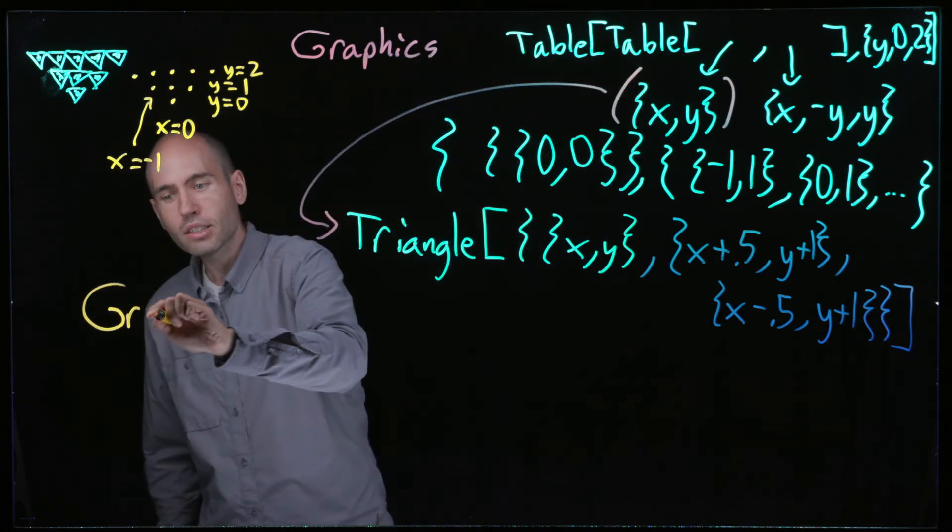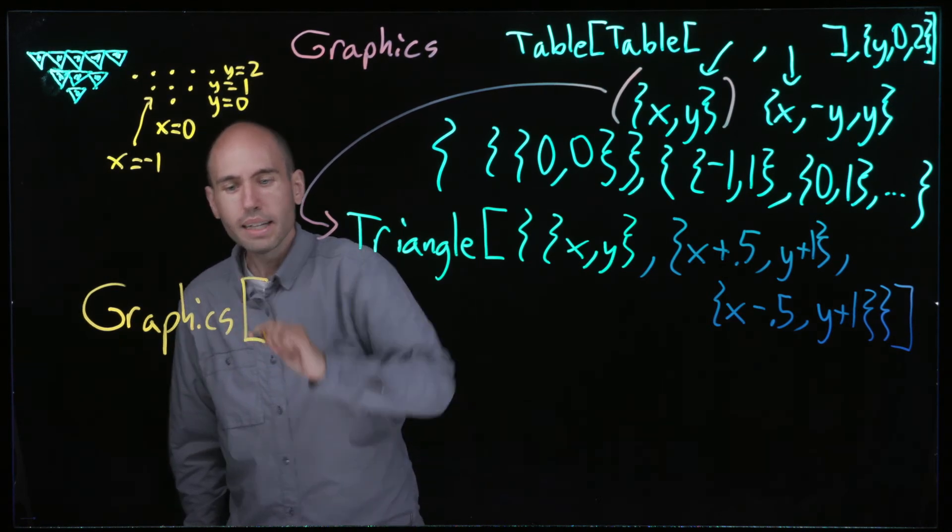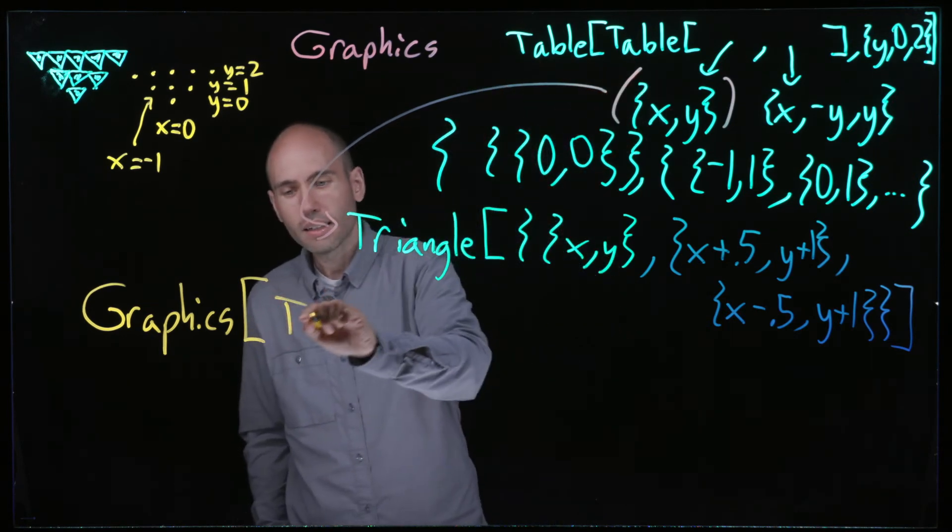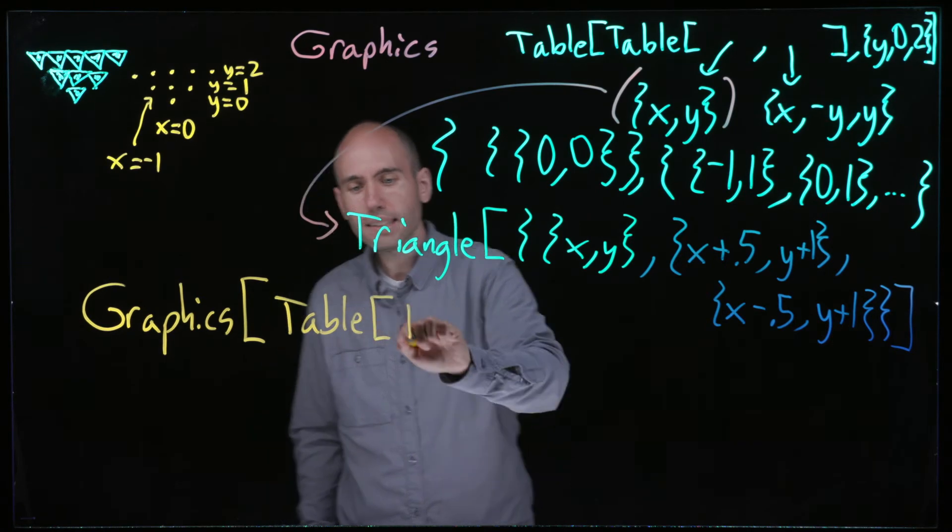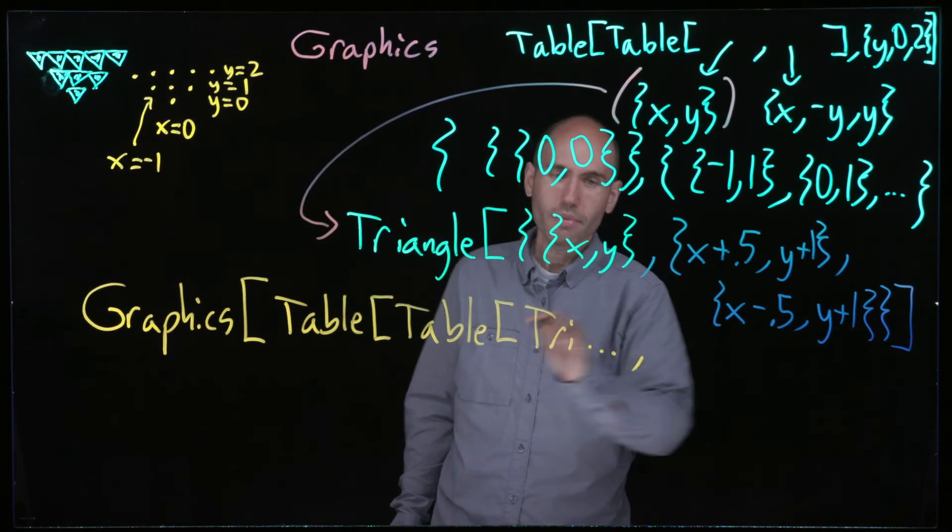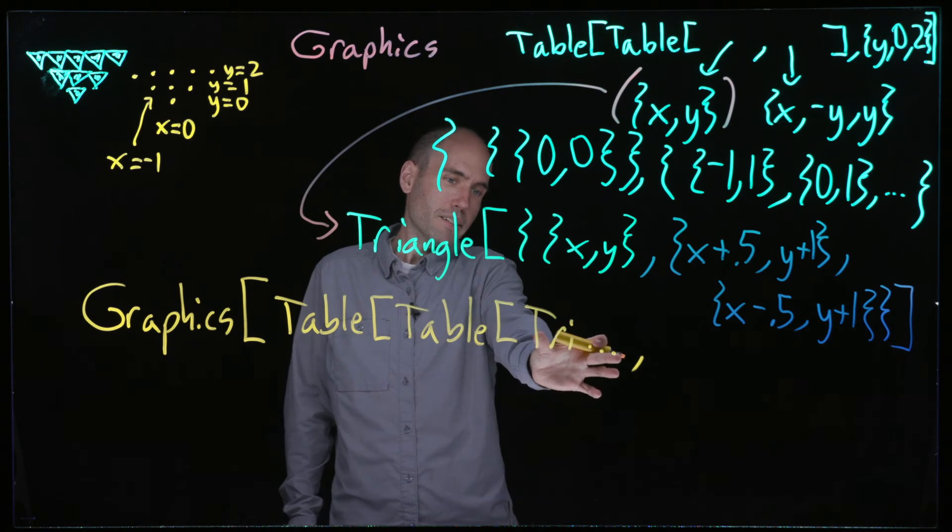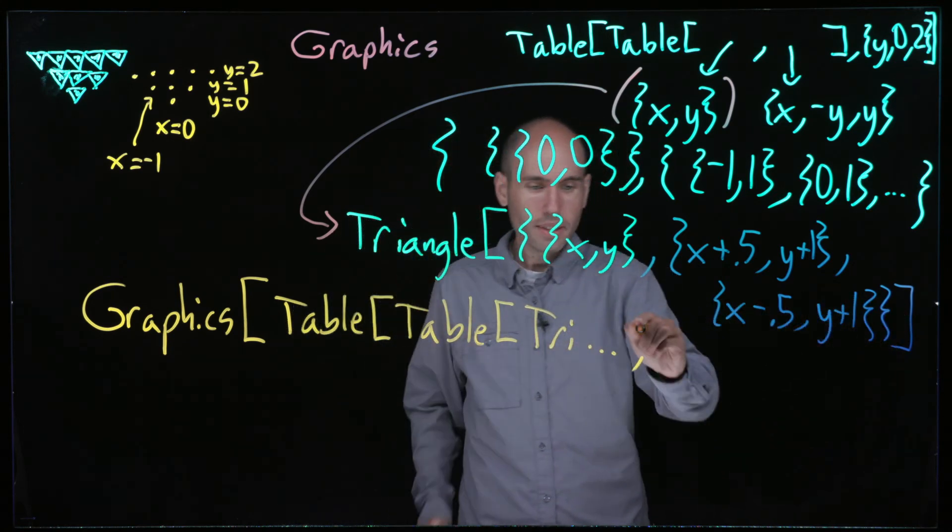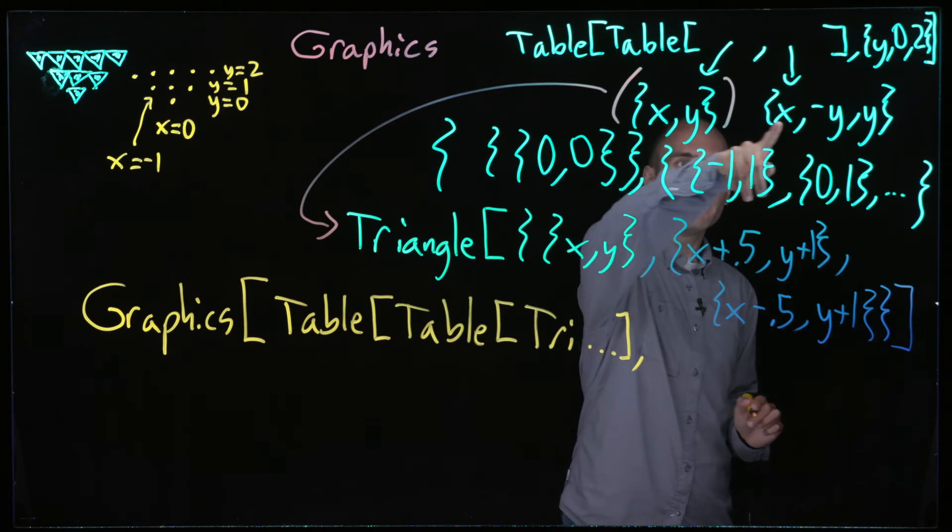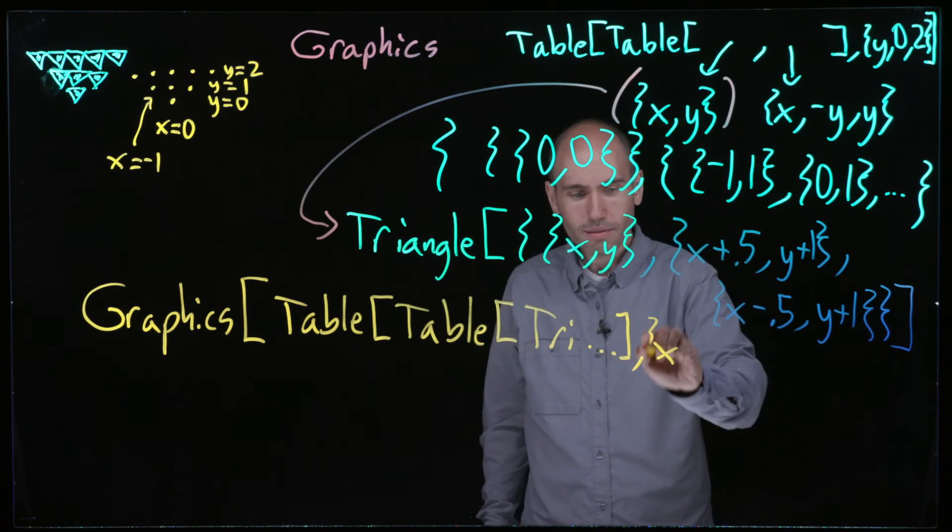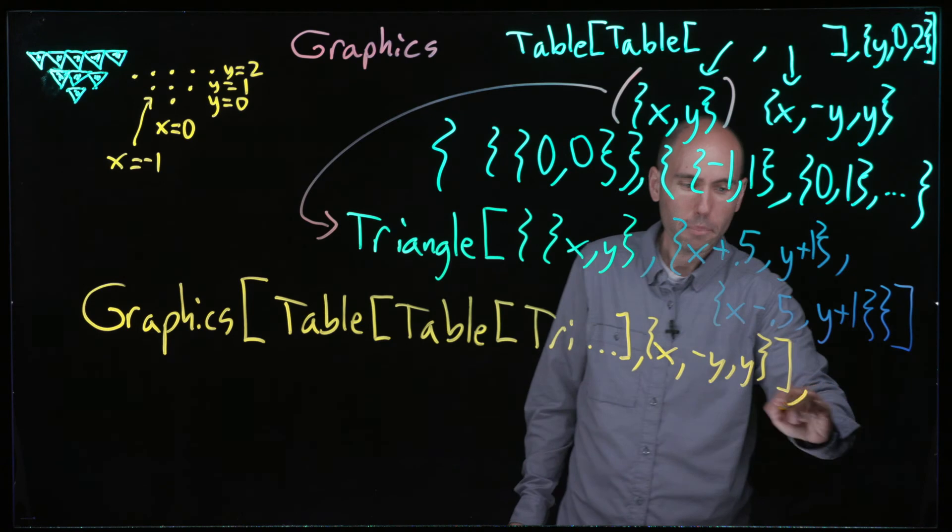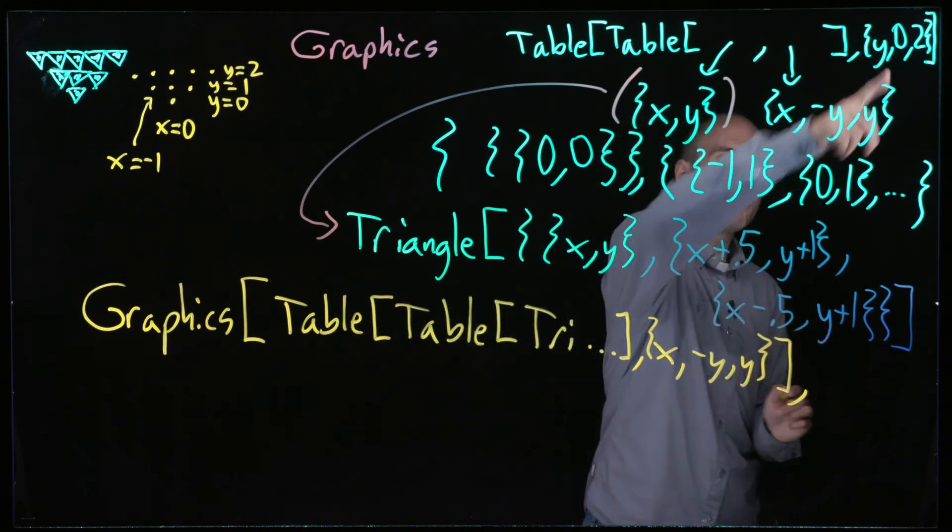I really want it to be drawn like this. How can I do that? How can I get the final answer? I just have to combine these two different lines, so I write graphics. Now I tell it what stuff do I want to take graphics of. I want to take graphics of this, this list of lists. So this table bracket, table bracket, triangle, and so that all goes here. Then we end the triangle, and then we have x negative y to y. Then we end this inner table, and then we have y from 0 to 2.